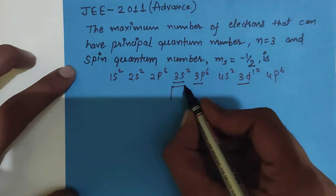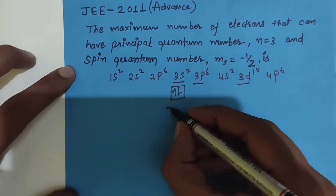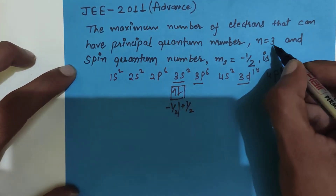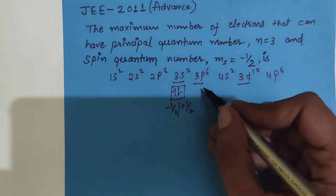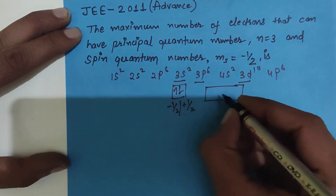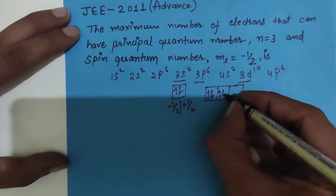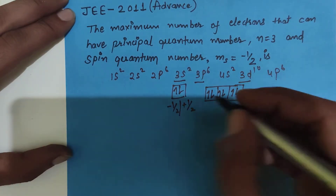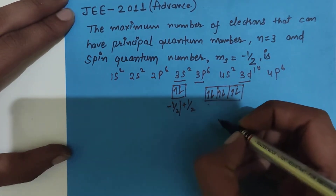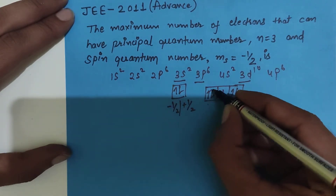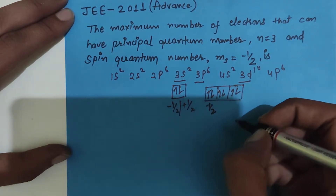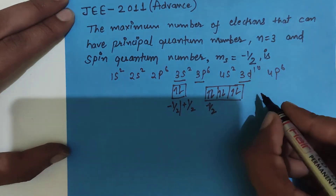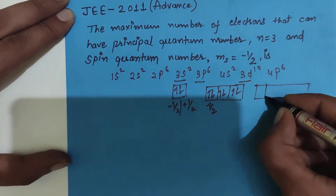If we look at one orbital, we can see two electrons in each orbital — one with spin minus 1 by 2 and the other with spin plus 1 by 2. We can write the electronic configuration as an orbital diagram. In each orbital, there will be one electron with ms equals minus 1 by 2. Here, the n value is 3, and every orbital will have exactly one electron with spin quantum number minus 1 by 2.